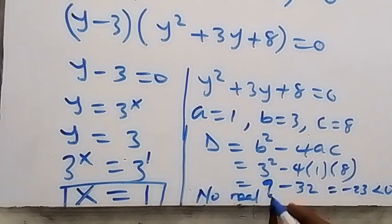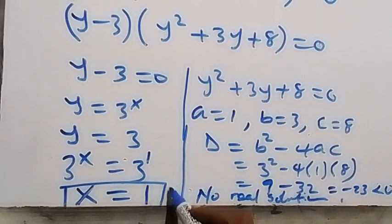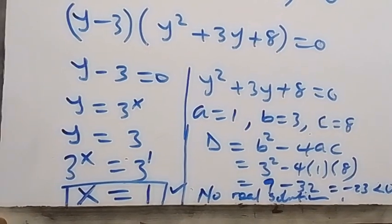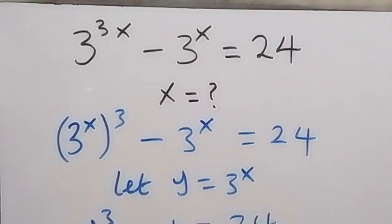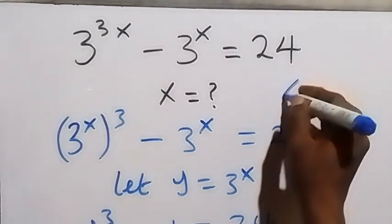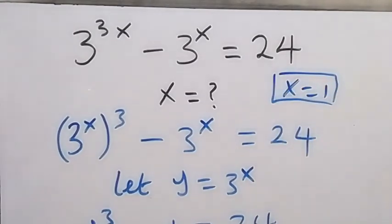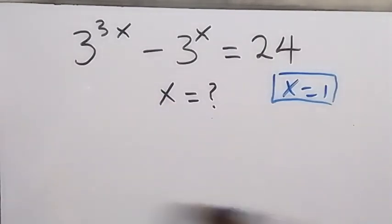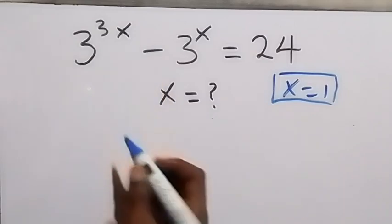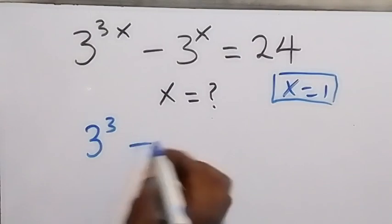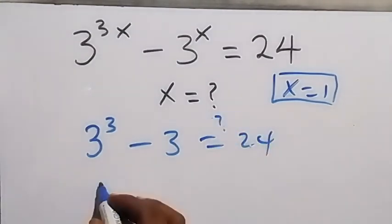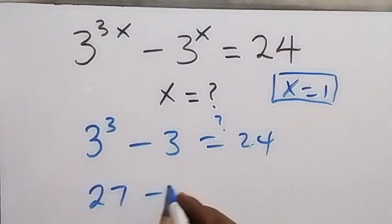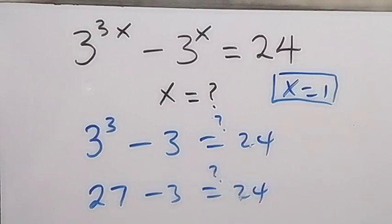So x equals 1 is our only solution. Let's verify: substituting x equals 1 into 3 raised to power 3x minus 3 raised to power x equals 24, we get 3 raised to power 3 minus 3 raised to power 1. That's 27 minus 3, which equals 24. This confirms our answer.